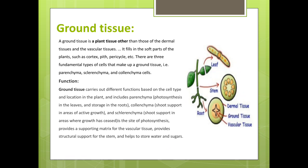Ground tissue: a ground tissue is a plant tissue other than those of the dermal tissue and the vascular tissues. It fills in the soft parts of the plant such as cortex, pith, pericycle, etc. There are three fundamental types of cells that make up ground tissues: parenchyma, sclerenchyma, and collenchyma cells. Ground tissues carry out different functions based on the cell types and location in plants. They are the site of photosynthesis, provide a supporting matrix for the vascular tissues, provide structural support for the stem, and help to store water and sugar.